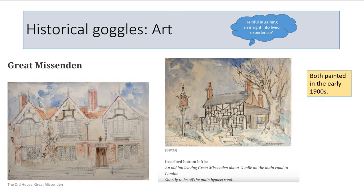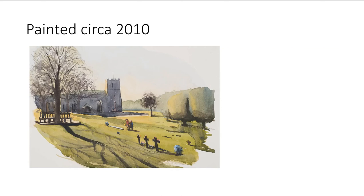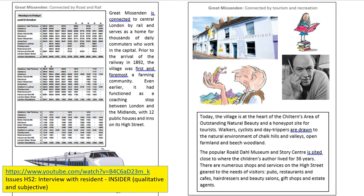Then there's art. Have a look — both of these were painted in the 1900s. What kind of sense of place do they give you? It looks very idyllic. And then you've got one painted circa 2010. So in your notes we've looked at cartographical and artistic evidence, and we're now going to look at just how well connected this area is.